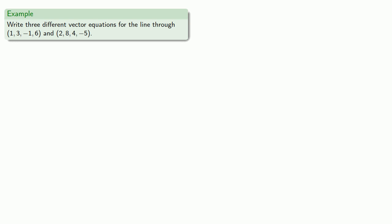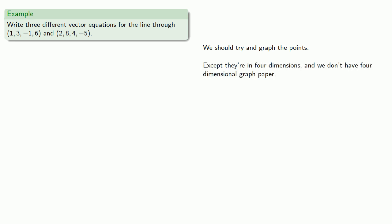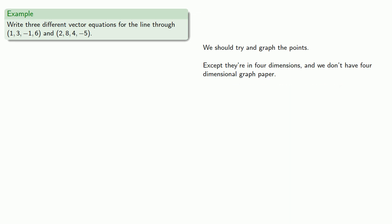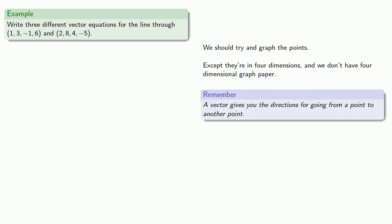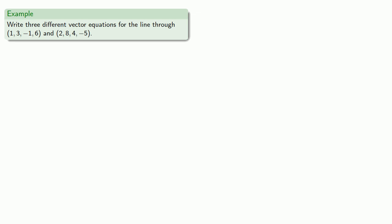Let's try to find three different vector equations for the line through (1, 3, -1, 6) and (2, 8, 4, -5). These points are in four dimensions, so we don't have four-dimensional graph paper — but we can still write the vector equation as long as we remember a vector gives directions from one point to another. If our starting point is the origin, the vector components and coordinates of a point are the same, so the vector (1, 3, -1, 6) takes us from the origin to a point on the line.